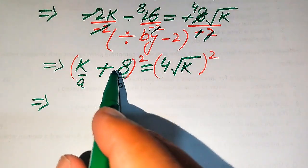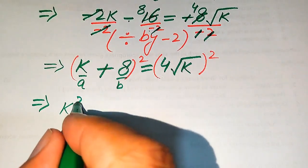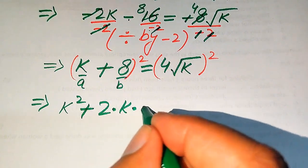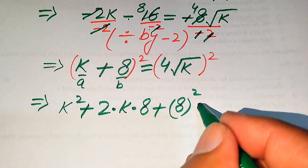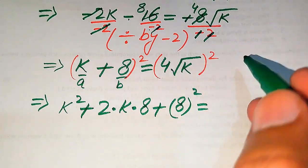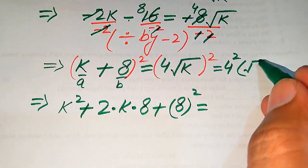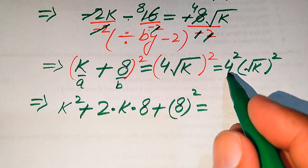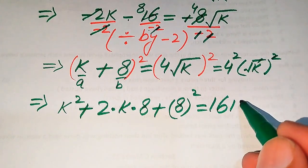After expanding the square, we get k squared plus 2 times k times 8 plus 8 squared equals, on the right hand side, 4 squared times square root of k whole squared. Since 4 squared is 16 and the square and square root cancel, we get 16k.